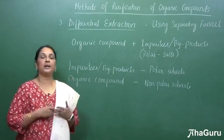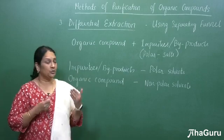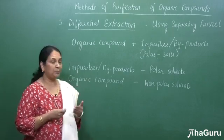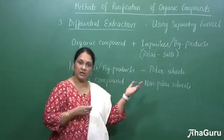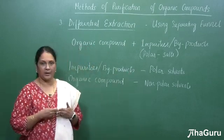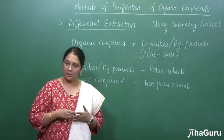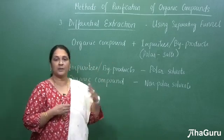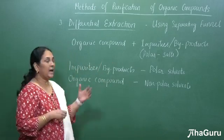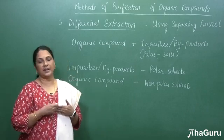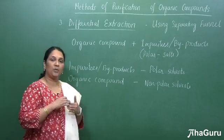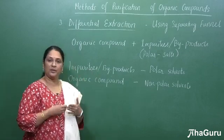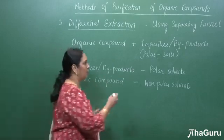In the same way, whenever we prepare an organic compound we usually have a lot of impurities and byproducts. These byproducts and impurities will be in the form of salts or they can be completely polar. So suppose the organic compound is in aqueous solution — how do we separate this organic compound from the byproducts which are polar? What we do is add an organic solvent to it. The organic compound will get mixed into the organic solvent and the byproducts or impurities will be soluble in polar solvents like water.